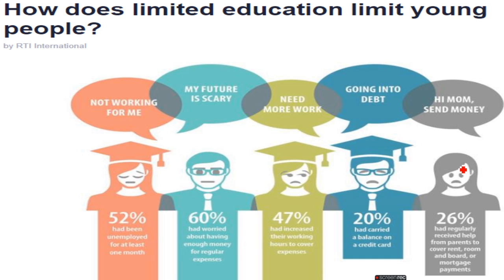How does limited education limit young people? The people who are not properly educated feel that things are not working for them — 52% had been unemployed for at least one month. They don't investigate everything. Whatever they were told to do, they were trained, not educated. Once they face new challenges — F, G, and beyond — they say this is not working for me, this place is not for me. They are not ready to take on challenges.